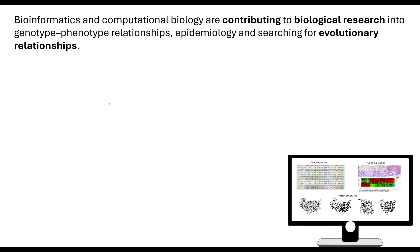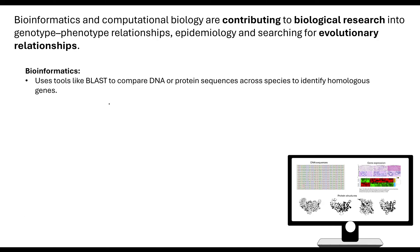The last key area is evolutionary relationships. This involves using tools like BLAST to compare DNA and protein sequences across species to identify homologous genes. You're not expected to know detail on this — what they expect you to know is that bioinformatics is about the use and organisation of databases and software tools, and computational biology is about modelling, simulation, and statistical analysis.